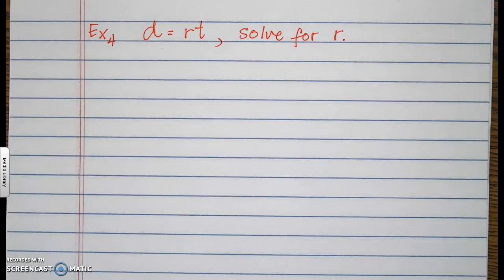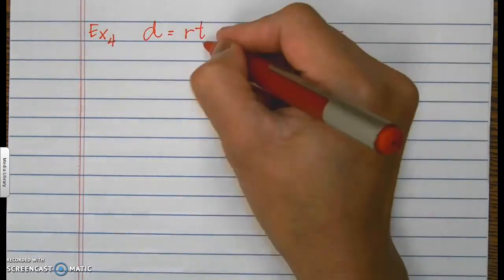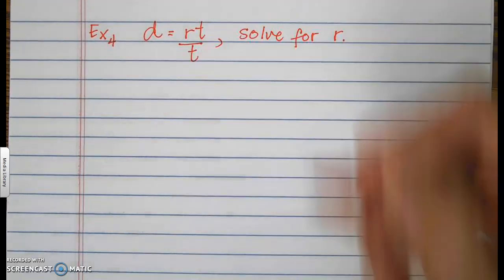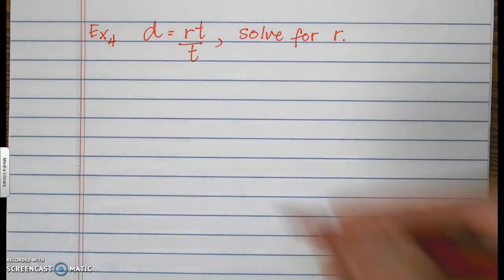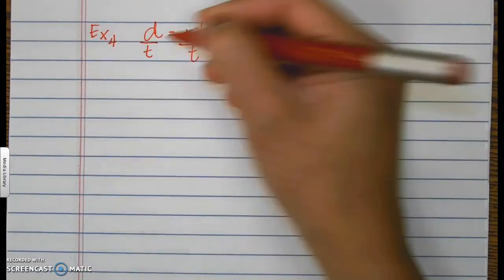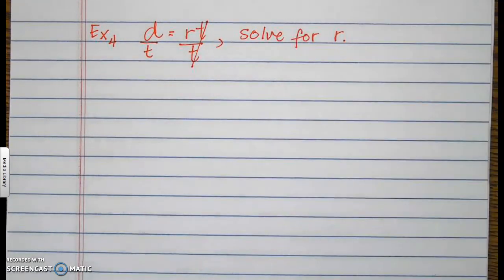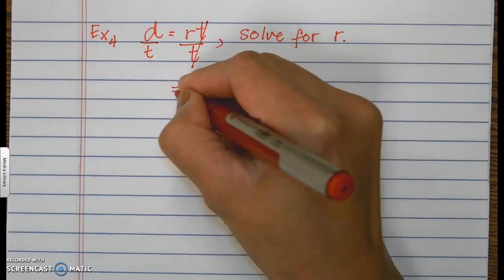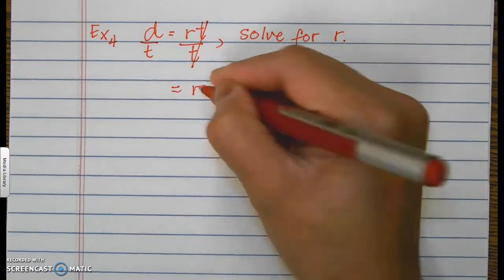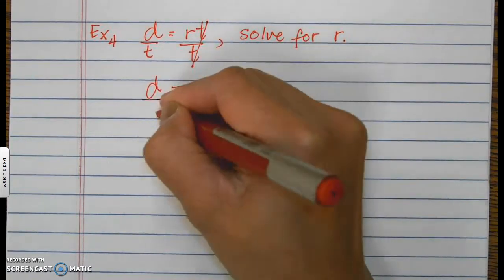You may need to go to the next page of your notebook. Example number 4: D equals r times t. Solve for r. This is very easy — all we need to do is divide the right side by t. Whatever you do on the right, you do on the left. T over t turns to 1, so r equals D over t.